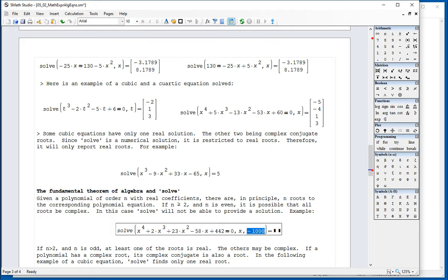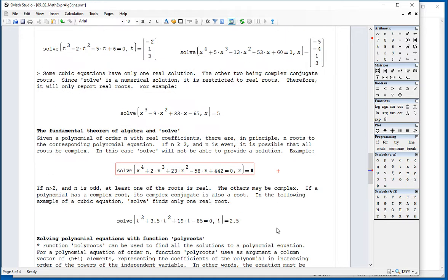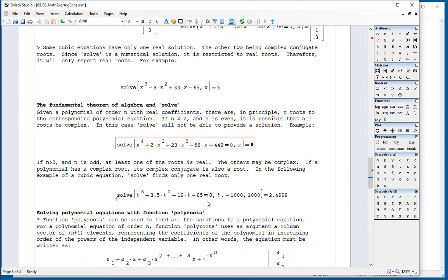So we want to be introducing complex numbers in the following video. But just to give you an idea, in this cubic polynomial, even if I change my range from minus 1,000 to 1,000, I only get one root. And basically what that means is that the other two roots are complex.